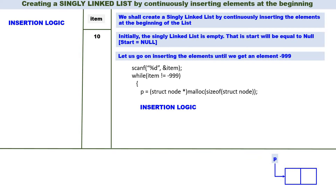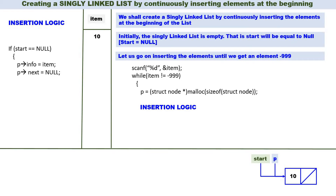This is the insertion logic. Here we first check whether start is equal to null or not. In our case there is no linked list yet — we just created a new node, so start is equal to null. When start is equal to null: P of info is equal to item, so 10 is inserted. P of next is equal to null. And start should contain the address of this node, therefore start is equal to P. If start is equal to null, we do three operations: insert the information part, make the address part null, and set start to the address of the new node. Insertion is done.